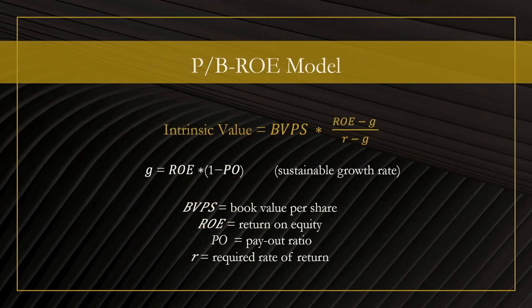Let us now look at the model. I will get to the meaning of each of the terms, but let me just read the formula. The intrinsic value of a share is computed by taking the book value per share and multiplying it by a fraction, where at the top you have the return on equity minus the sustainable growth rate, and at the bottom you have the required rate of return minus the sustainable growth rate.